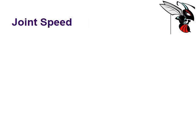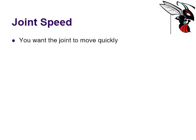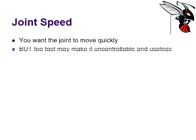Now let's talk about joint speed. Torque and speed are inversely proportional, so you do want the joint to move quickly, but speed should not be the primary objective. You can build a joint that's really fast but completely useless because you can't control it. You want to move as quickly as you can control — a slower, controllable joint is more useful than an uncontrollable fast one.